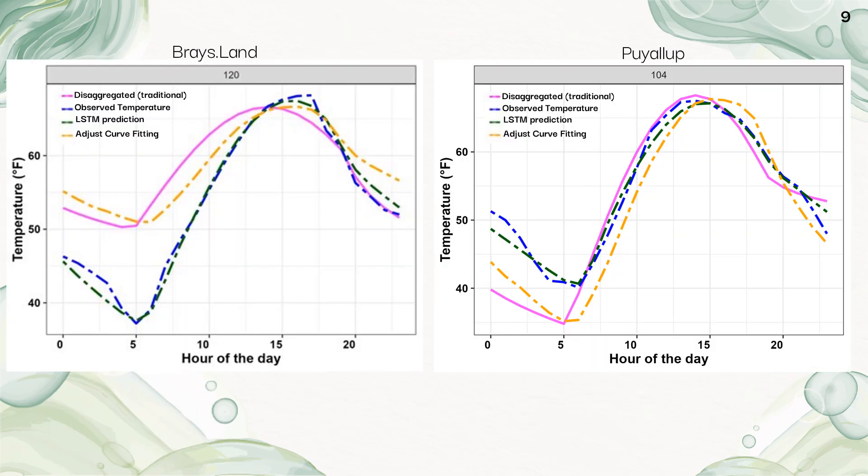These are just example graphs from two different locations on two different randomly chosen days, but I wanted to show them so you kind of get an idea of what model output looks like. So there's that observed temperature in the blue, the green line is my model, and then the other two compared models are yellow and pink.